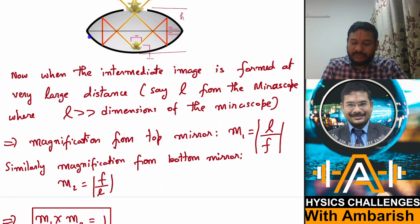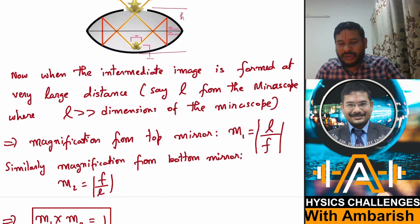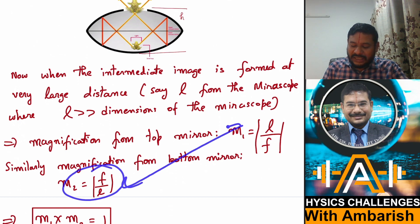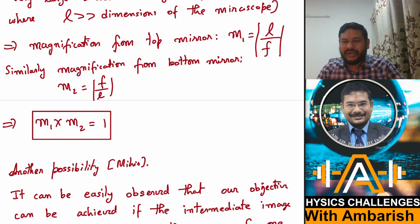Similarly, now for the lower mirror, this L is serving as object distance, right? So I can write F by X, magnification can also be written as F by X. So in our case, it becomes F by L. And if you multiply the two magnifications, it must be coming out to be one, right? So I'm worried only about the magnitude of magnification. So I hope it is clear why the image is radially inverted and also the magnification is one.